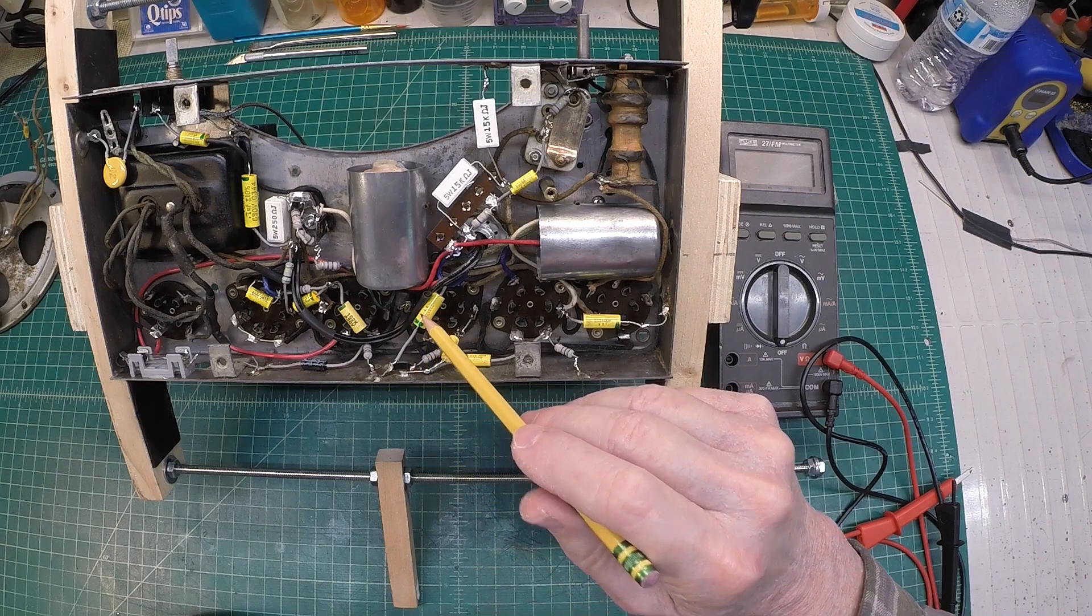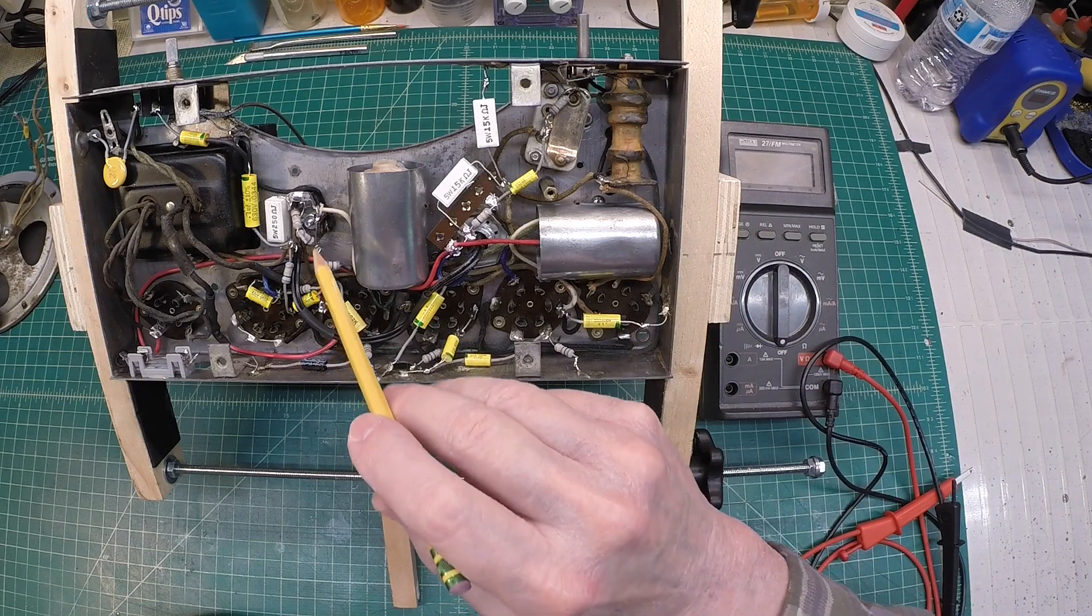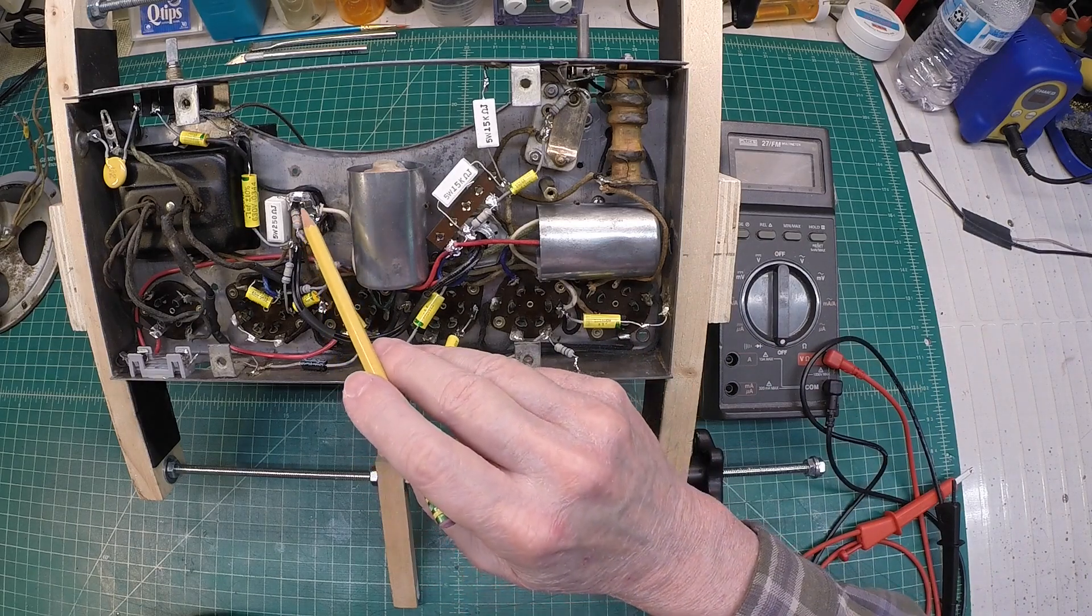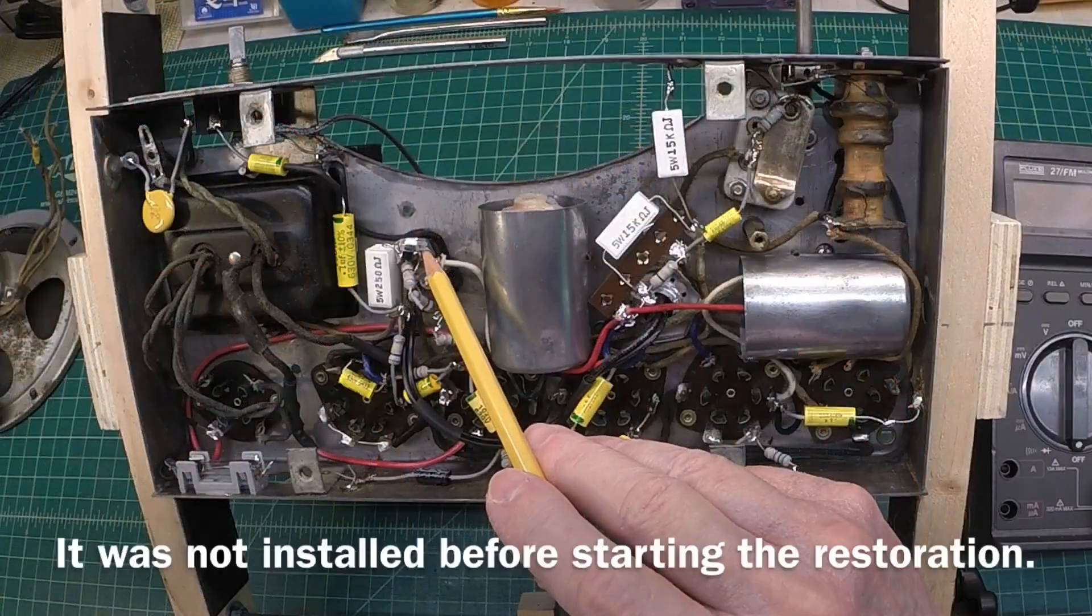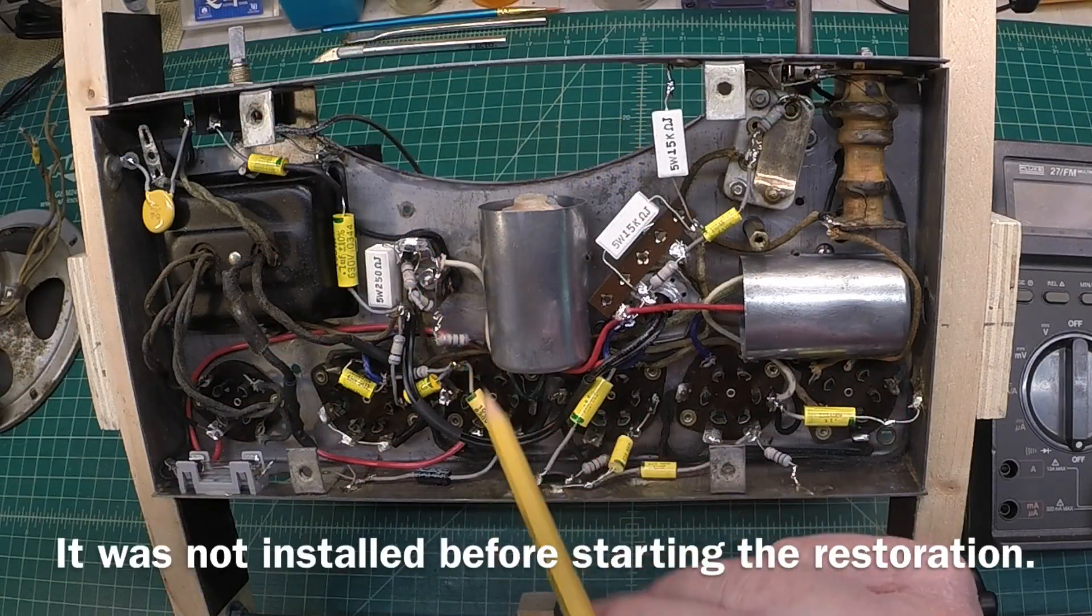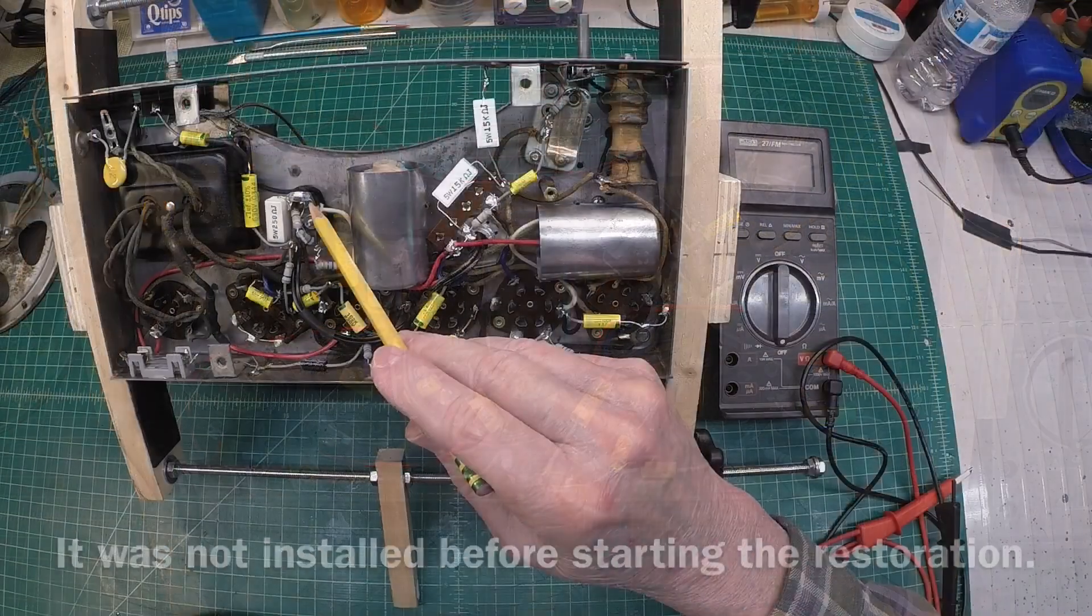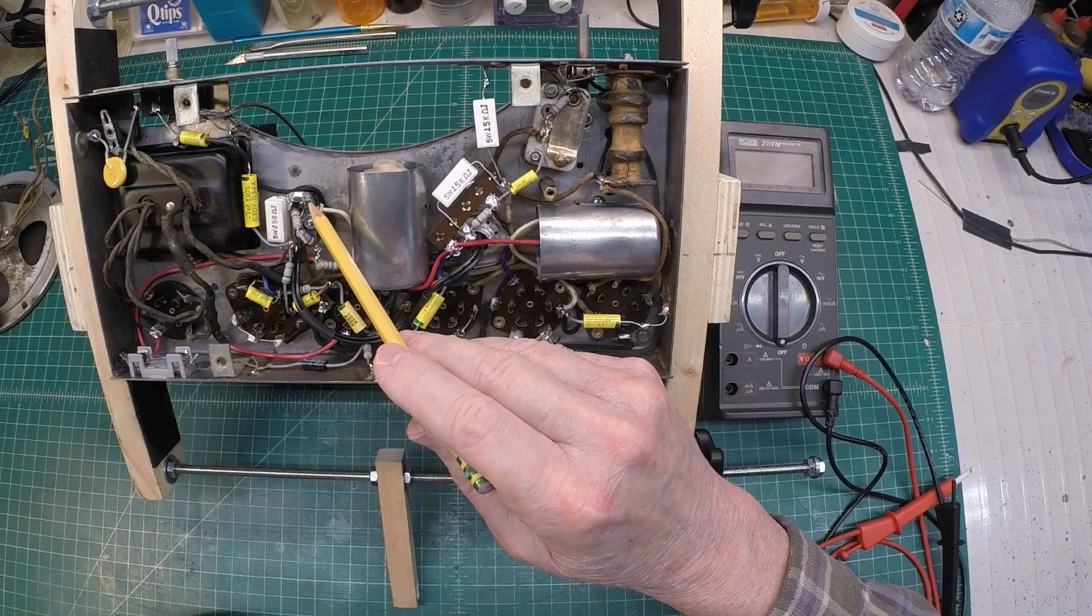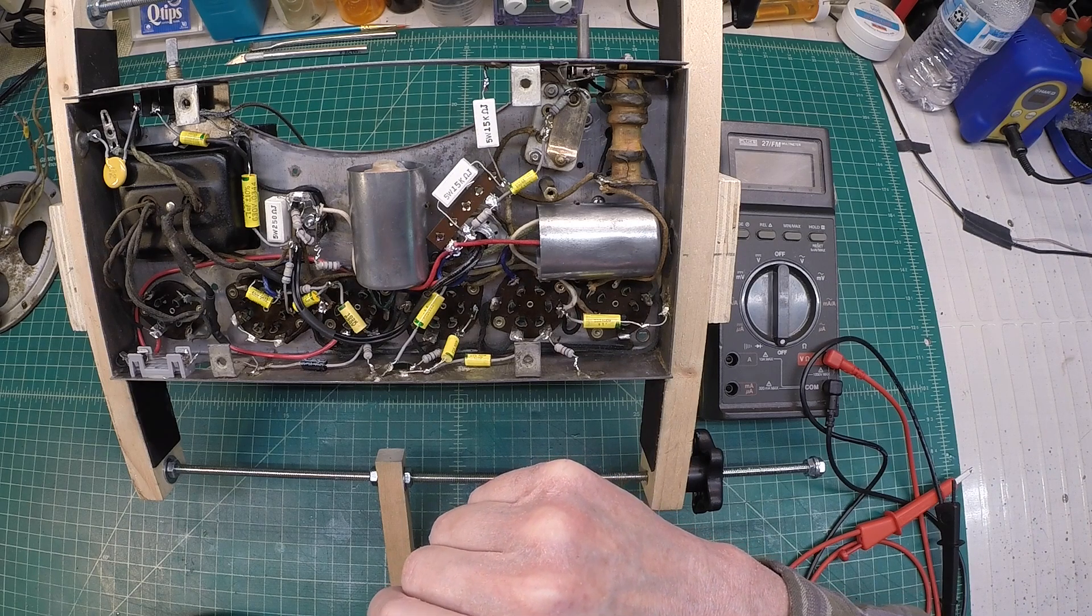I've already confirmed all of the capacitor values. I had one capacitor missing and it's located right here. A 500 picofarad cap off of the second IF transformer that actually acts as a filter and pushes the IF frequency to ground.